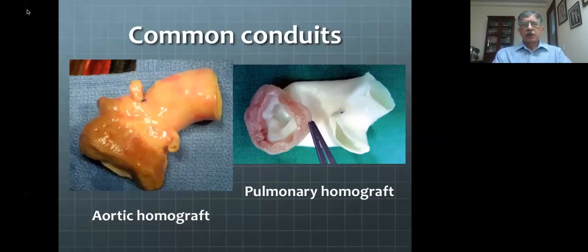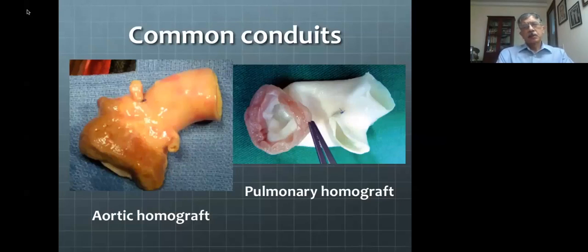The pulmonary homograft has very little elastic lamina — it's thin and more pliable, and just collapses as you can see. It also has much less muscle at the base. It is for these reasons that the pulmonary homograft is better suited as the RV-PA conduit, because nature made that pulmonary valve and pulmonary artery to be a volume receptacle. I'll subsequently come to the differences and problems with these pulmonary homografts.